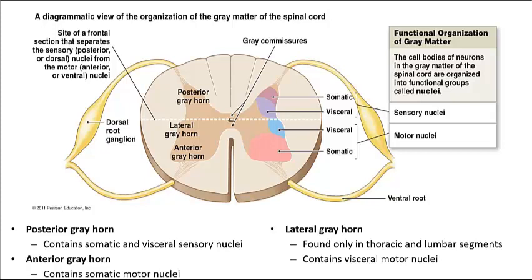The spinal cord also contains white matter, which includes large numbers of myelinated and some unmyelinated axons. White matter is further subdivided into columns: the posterior white column lies between the posterior gray horns and the posterior median sulcus; the lateral white column includes white matter on either side between the anterior and posterior columns; and the anterior white column lies between the anterior gray horns and the anterior median fissure.